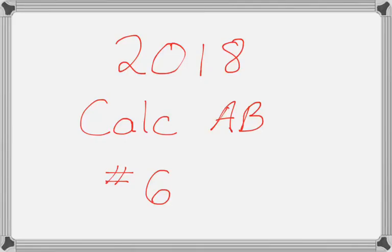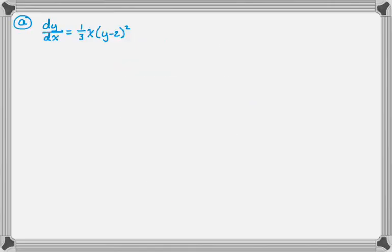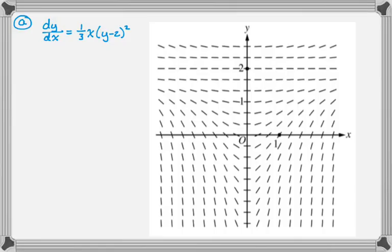Okay, in this video we're going to talk about number 6 from the 2018 Calc AB exam, and it's a question about a differential equation. We are given the differential equation as dy dx equals 1 third x times the quantity of y minus 2 squared, and we're also given a slope field.